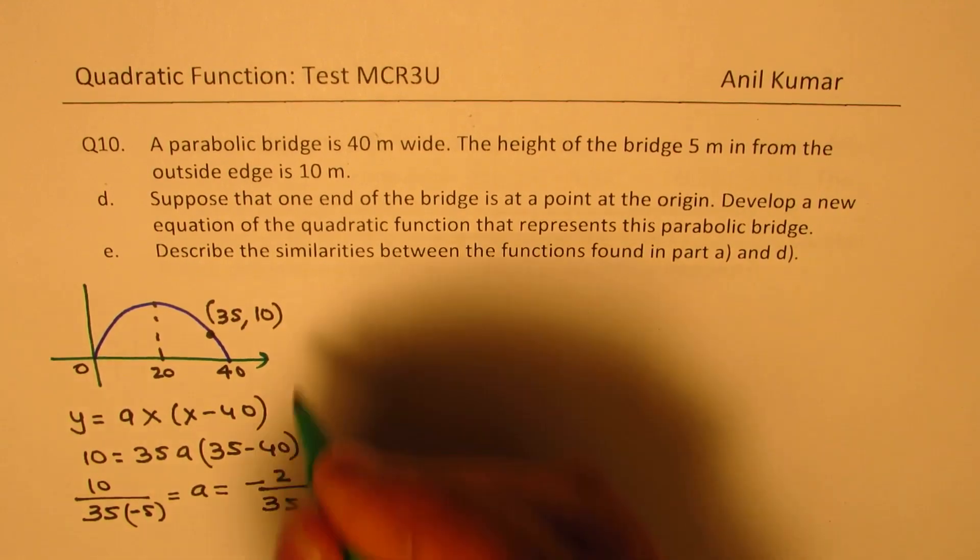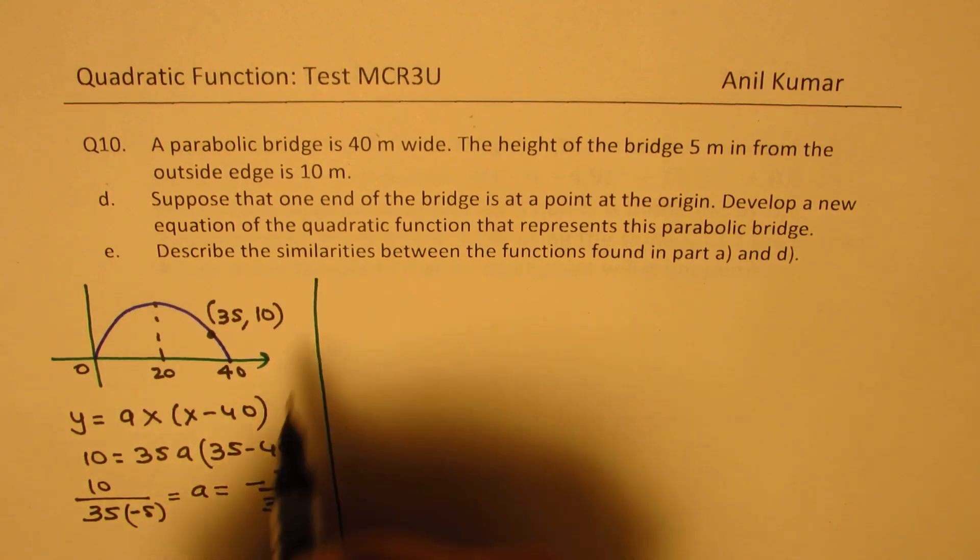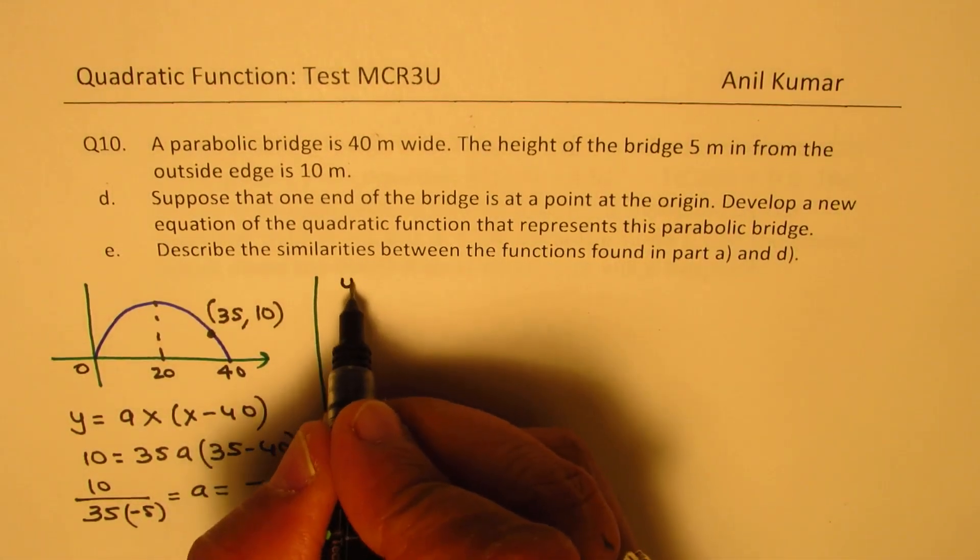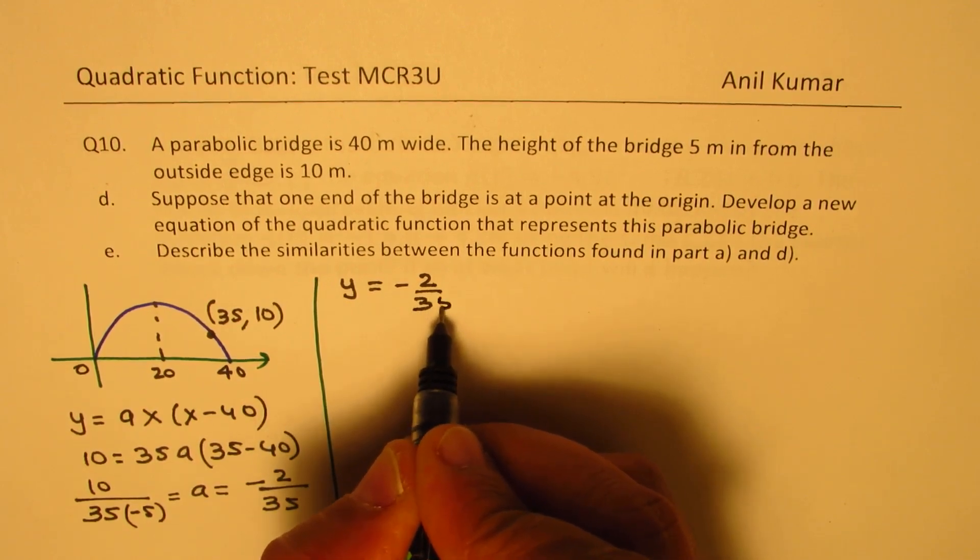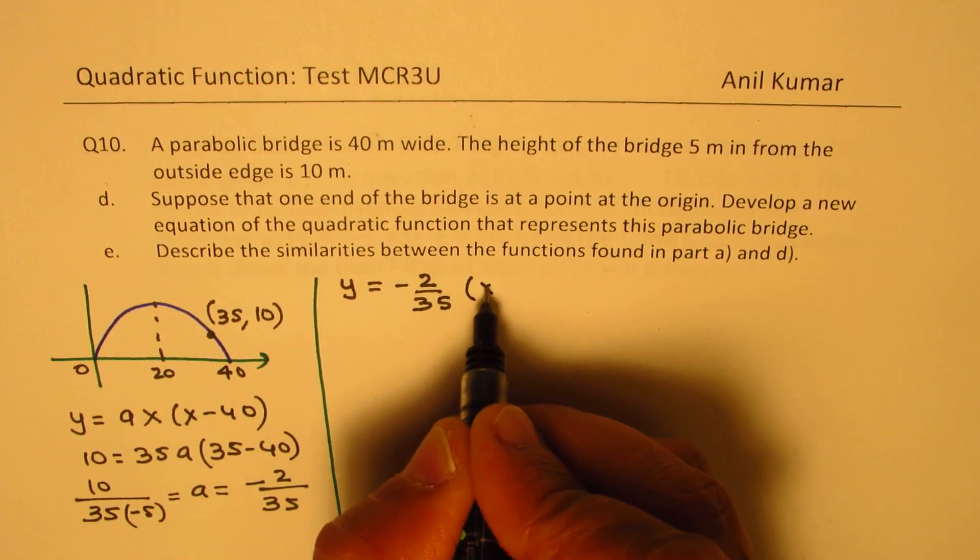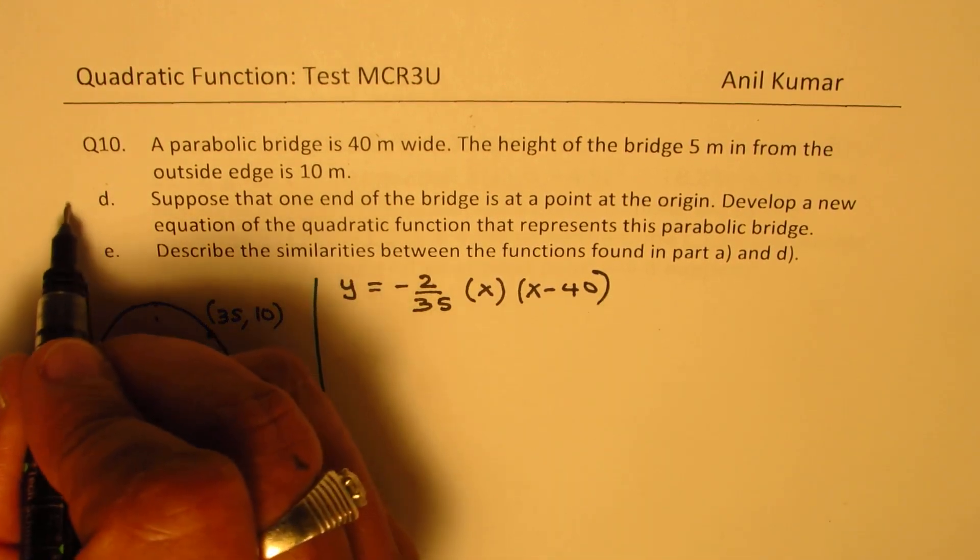So here is our equation, which can be written as y equals to minus 2 over 35, x times x minus 40, correct? So this is part D.